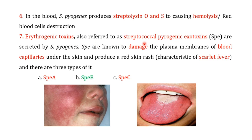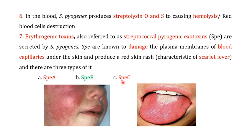Another important virulence factor of S. pyogenes is the erythrogenic toxins, also referred to as streptococcal pyrogenic exotoxins — abbreviated as SPE. These SPE are important virulence factors and are known to damage the plasma membrane of blood capillaries under the skin, producing a red skin rash which is a characteristic feature of scarlet fever, as is very obvious in this particular image. There are three types of SPE: SPEa, SPEb, and SPEc.